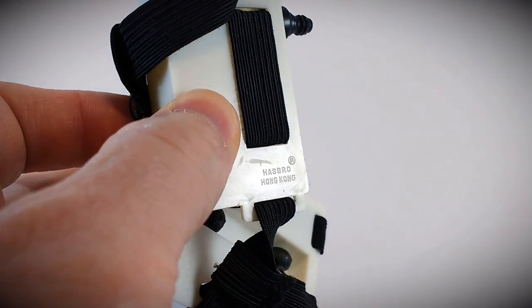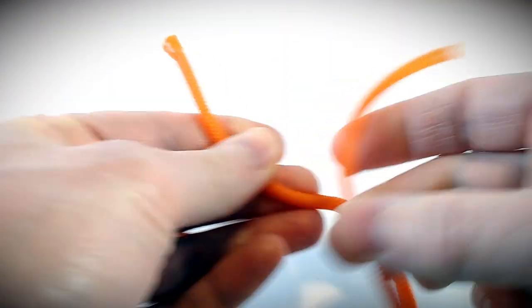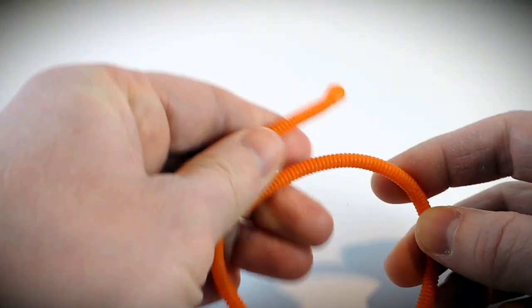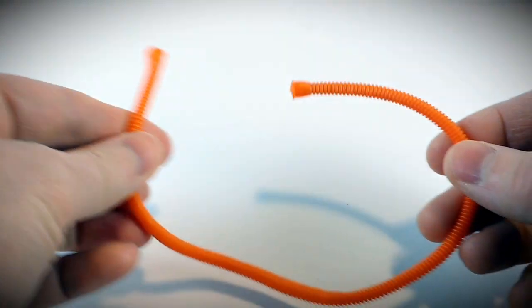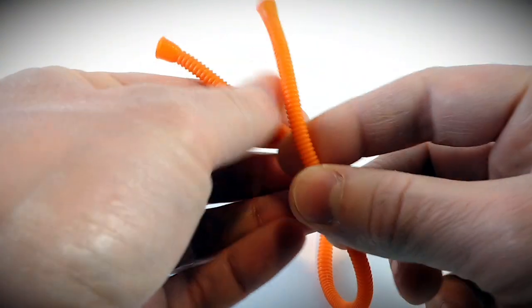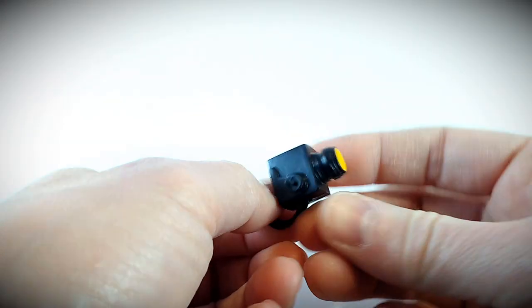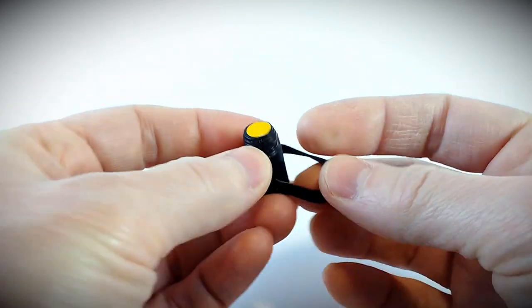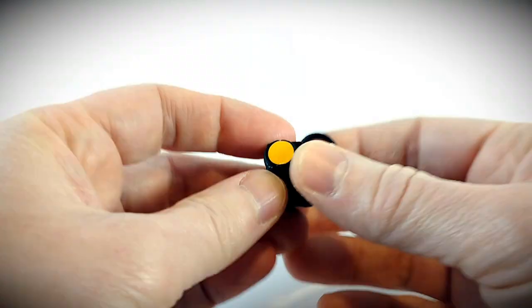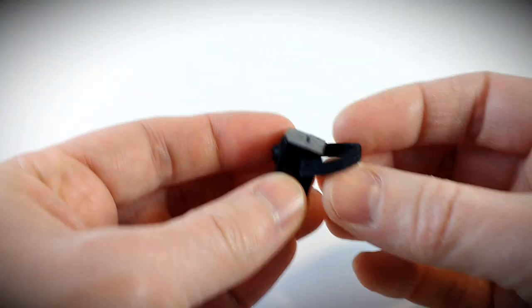The orange tether line is a very flexible vinyl material and it's similar to the air hoses in other GI Joe sets. The wrist mounted camera here was also used in other sets by Hasbro for GI Joe.